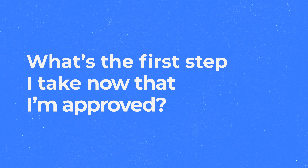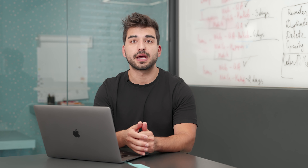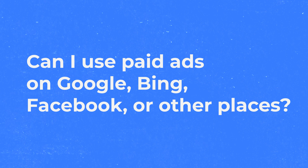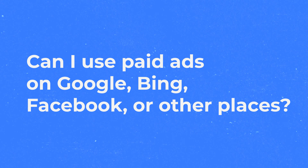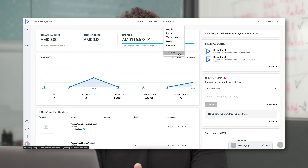What's the first step now that I'm approved? The first step is to make sure that your impact.com profile is fully set up. As shown with the link generator, this is what you'll need before you start posting. Can I use paid ads on Google, Bing, Facebook, or other places? Yes, but keep in mind branded terms, which I'll talk about next.